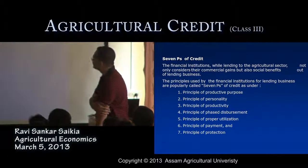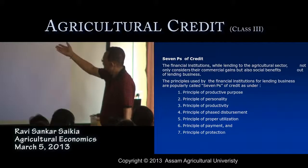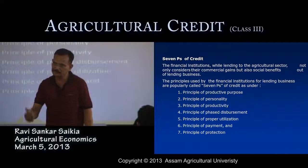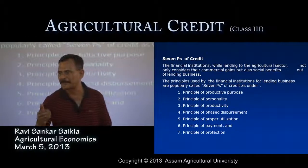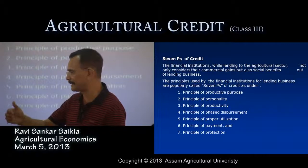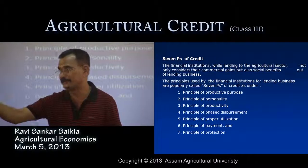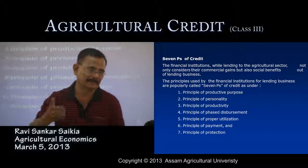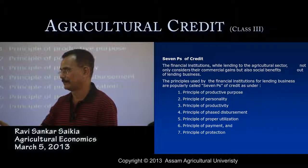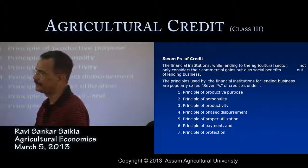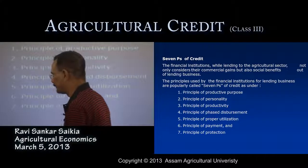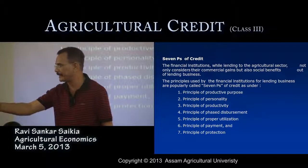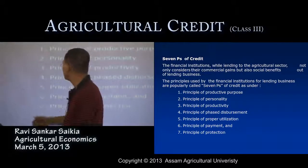Financial institutions, while lending to the agricultural sector, not only consider commercial gains but also social benefits. The objective of advancing loans to the agricultural sector — being a prime sector — is not only to earn profit for the banking organization but also to achieve social benefit at a socially desired rate, since 70 to 80 percent of people in the economy are related to agricultural occupations.